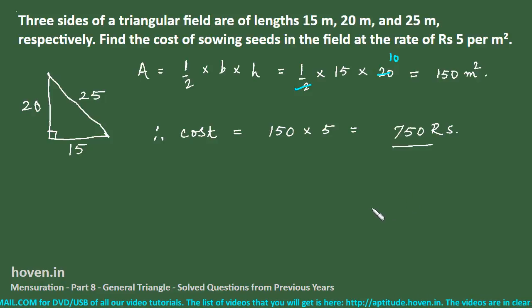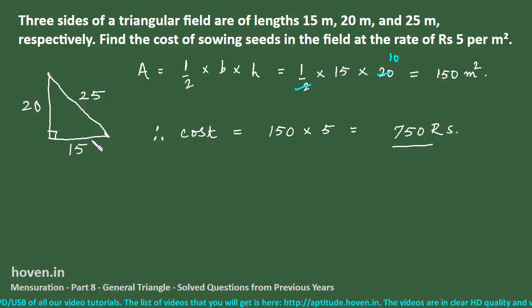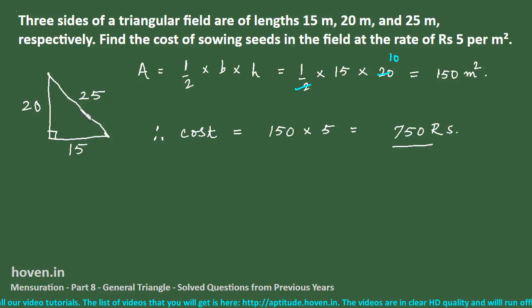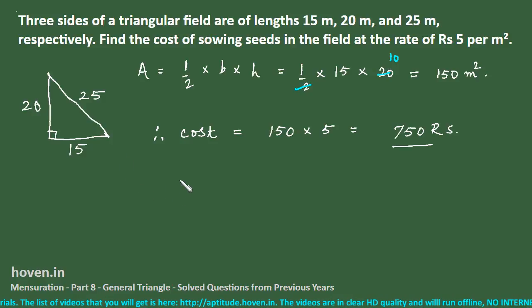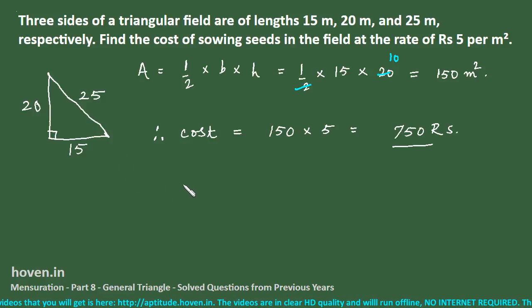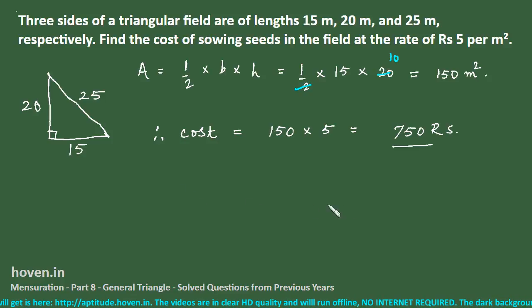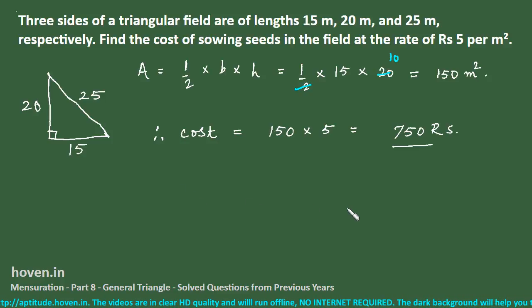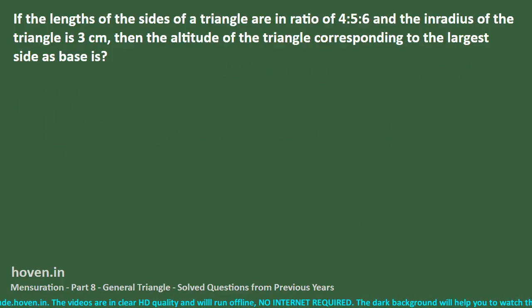The observation that 15, 20, 25 are Pythagorean triplets helps solve an apparently longer question in just two steps. Let us move to the next question.